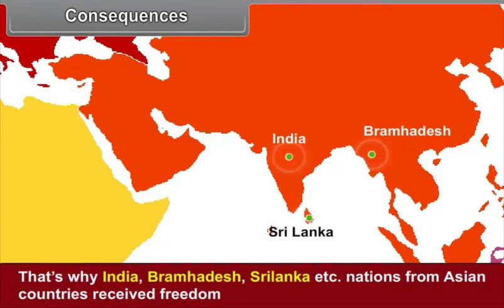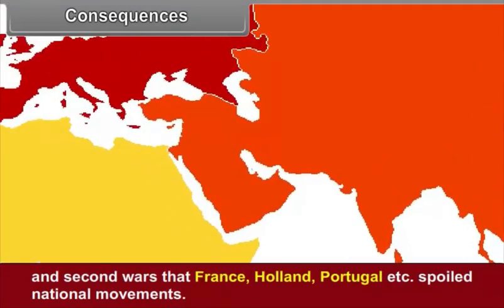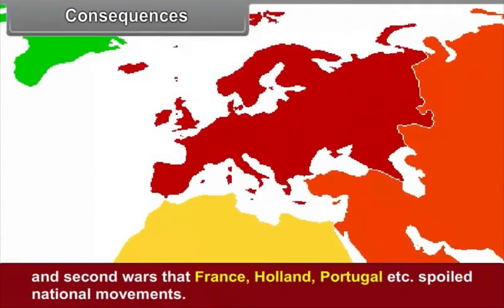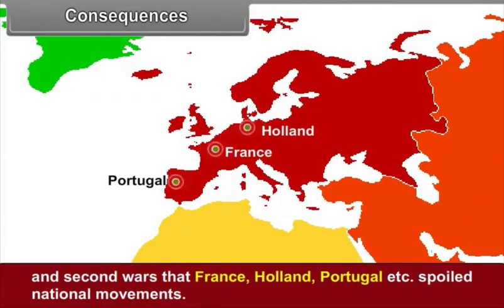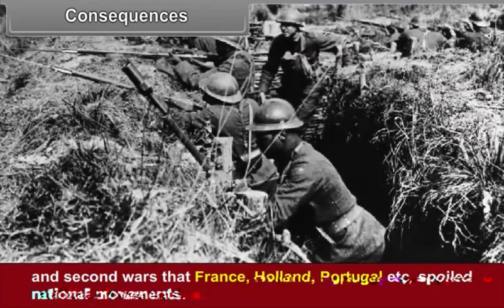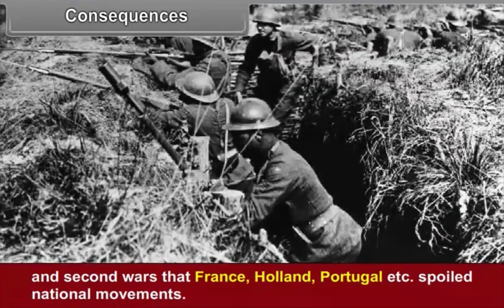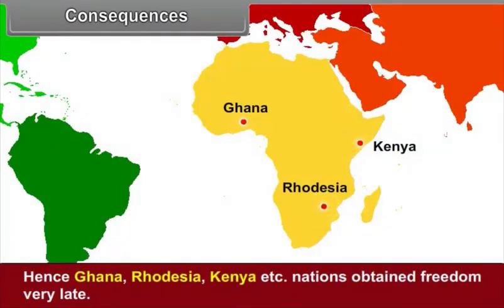Nations from Asian countries such as India, Burma, Sri Lanka, etc. received freedom. The second reaction was that France, Holland, Portugal, etc. suppressed national movements. Hence, Ghana, Rhodesia, Kenya, etc. obtained freedom very late.